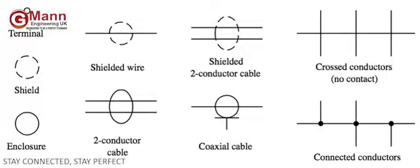Electrical wiring is an electrical installation of cabling and associated devices such as switches, distribution boards, sockets and light fittings in a structure. Wiring is subject to safety standards for design and installation. Allowable wire and cable types and sizes are specified according to the circuit operating voltage and electric current capability, with further restrictions on the environmental conditions, such as ambient temperature range, moisture levels, and exposure to sunlight and chemicals.